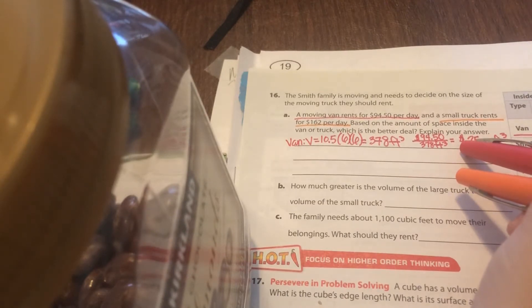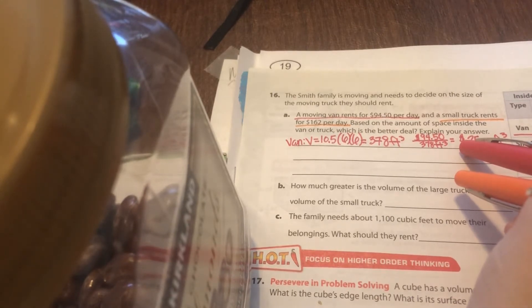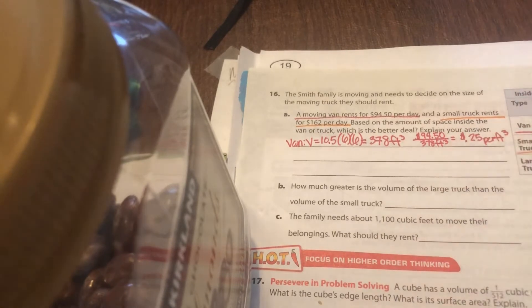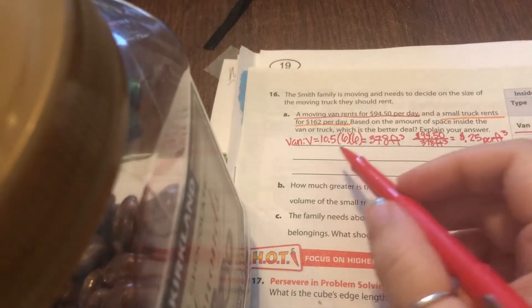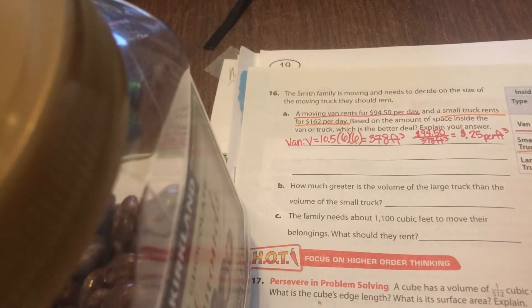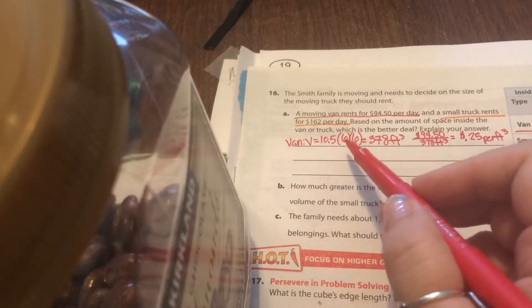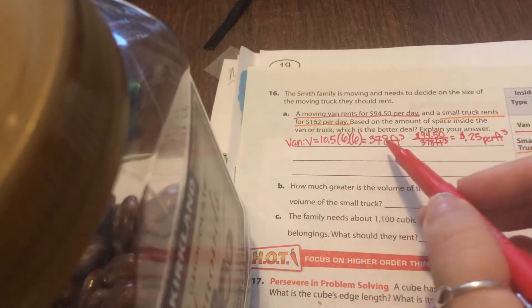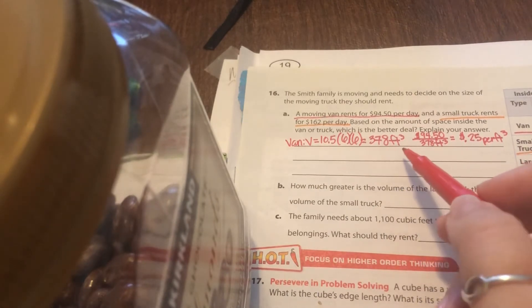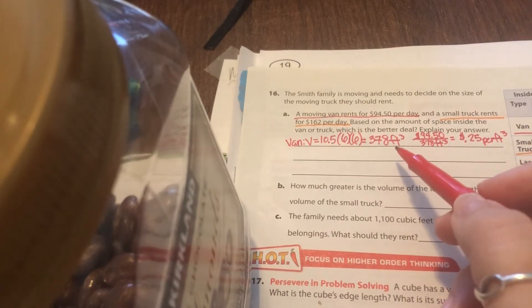So first of all, I need to find, well, how much does it cost per one cubic foot? And then I can compare which one's the better deal. I know that this is a volume problem because it's talking about the space inside of a van. So when it's talking about the space inside of a 3D object, we know that that's dealing with volume. So right here, the very first one, the moving van, it gives me the dimensions of 10.5, 6, and 6. So I labeled that this is talking about the van and the volume is 10.5 times 6 times 6. If you type that into your calculator, you get 378 cubic feet.